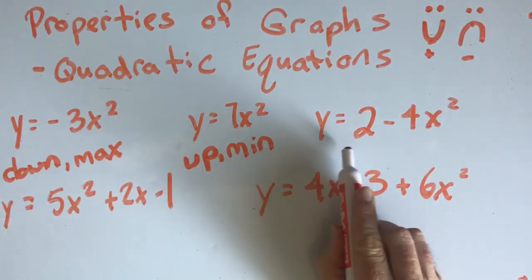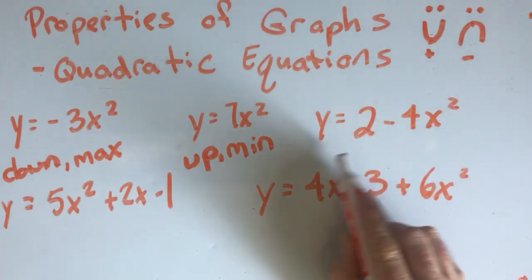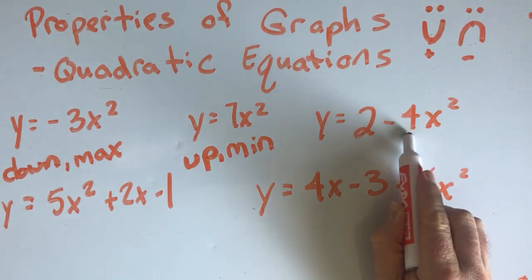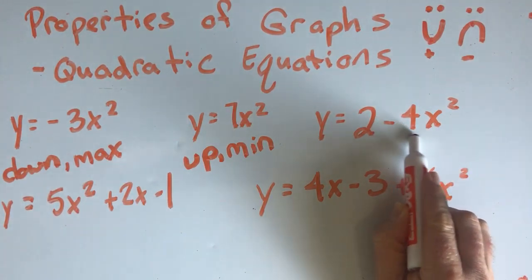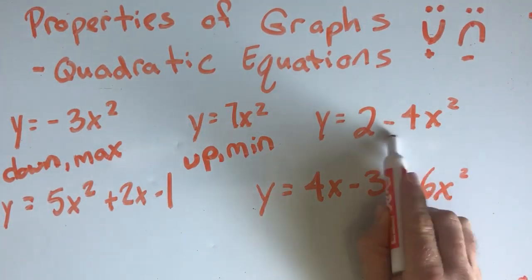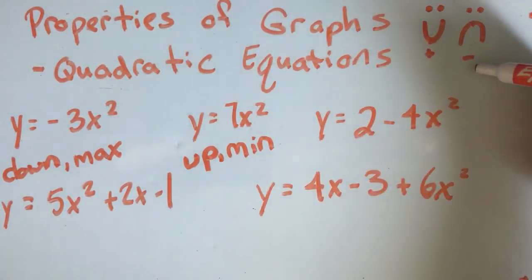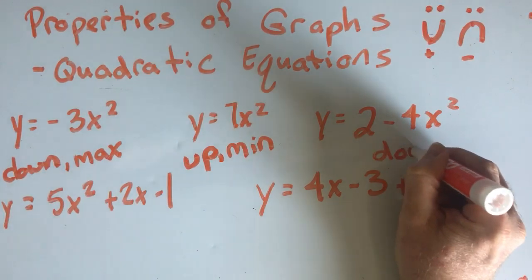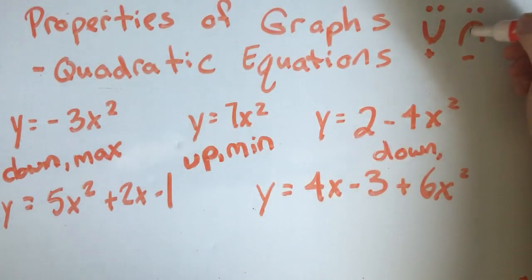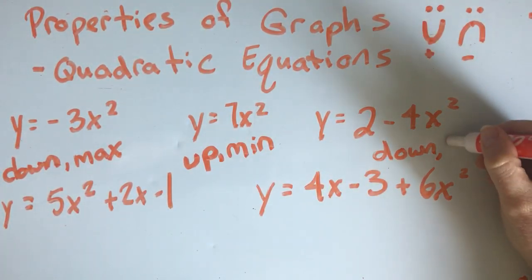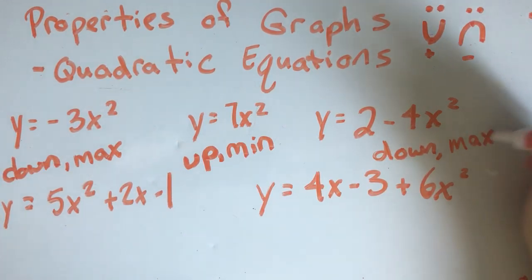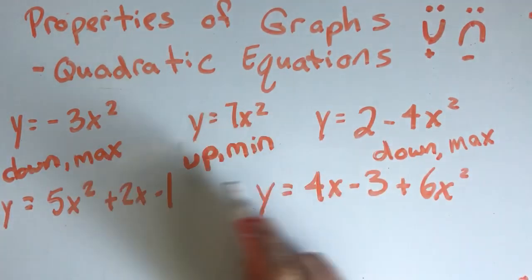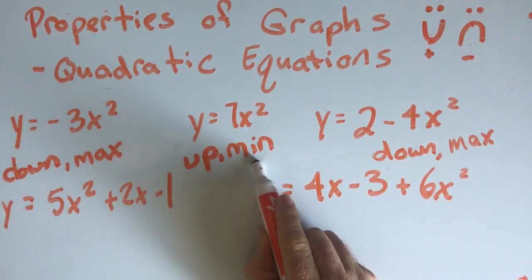Now this one here, I am looking for the x squared. Here's the x squared. So the number that is in front of the x squared, the coefficient is negative four. It's minus four. So it's negative. So negative open down. And on a negative, that's as high as it goes. So that's a max. So if it's down, it always has a max. If it is up, it has a minimum.